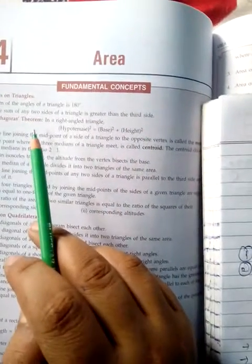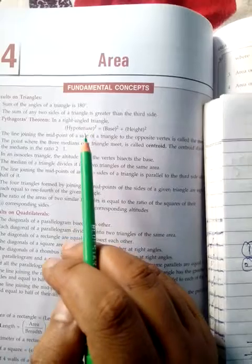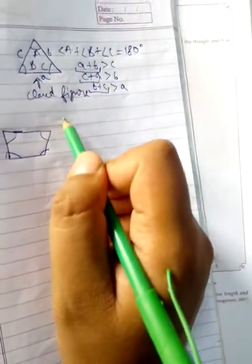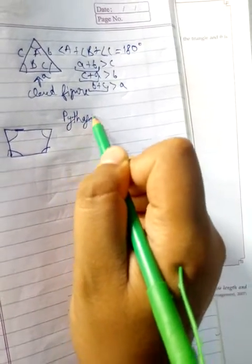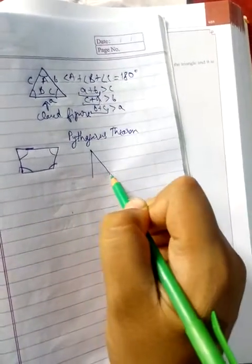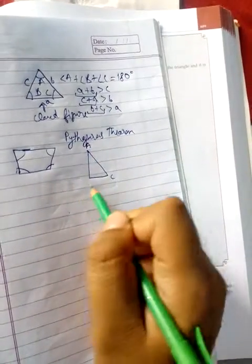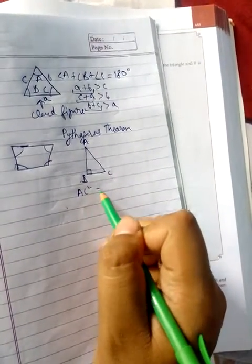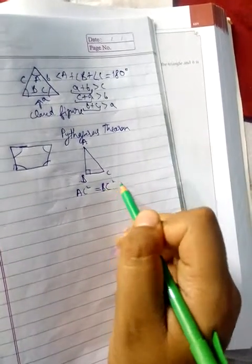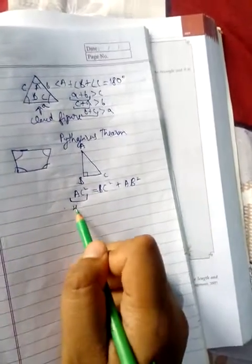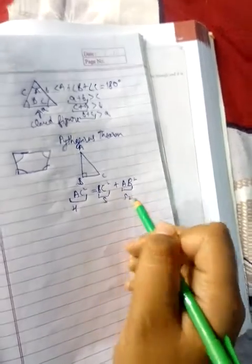The next property is the Pythagorean theorem: in a right angle triangle, the hypotenuse squared is equal to base squared plus height squared. So in a right angle triangle, if AC is the hypotenuse, then AC squared equals BC squared plus AB squared, where AC is the hypotenuse and the other two are the remaining sides.